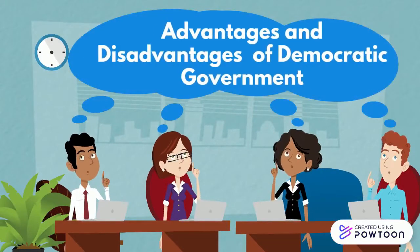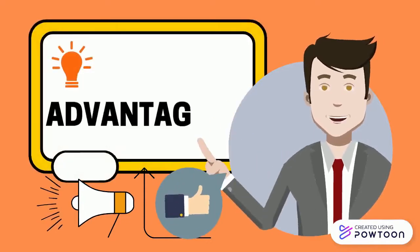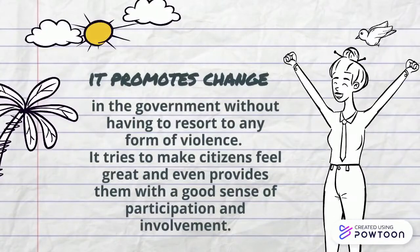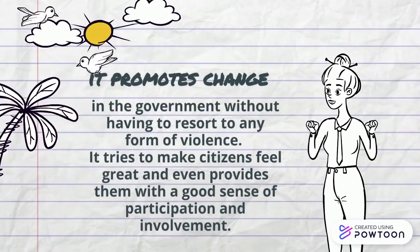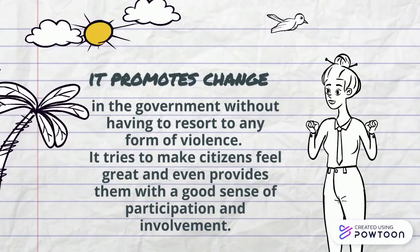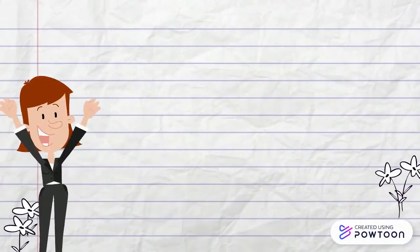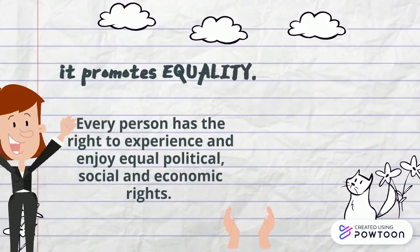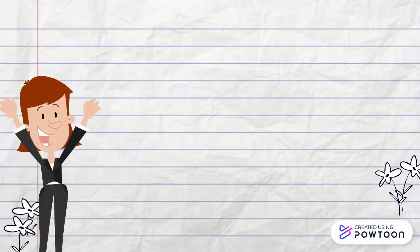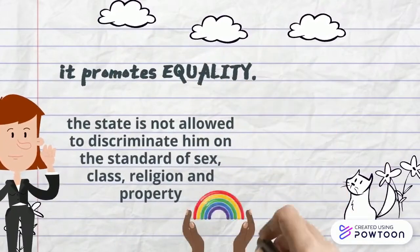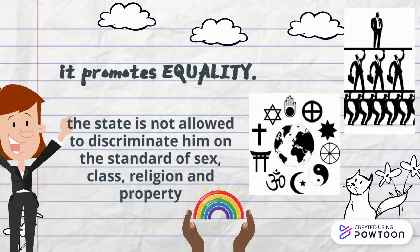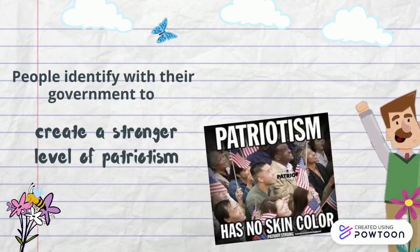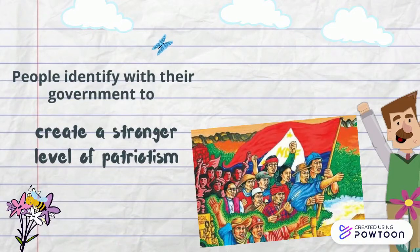Advantages and Disadvantages of Democratic Government. Some of the advantages are: First, it promotes change in the government without having to resort to any form of violence. It tries to make citizens feel engaged and provides them with a good sense of participation and involvement. Secondly, it promotes equality — every person has the right to experience and enjoy equal political, social, and economic rights, and the state is not allowed to discriminate on the basis of sex, class, religion, and property. Thirdly, people identify with their government, creating a stronger level of patriotism, because they are allowed to fight for the things that they want in life.